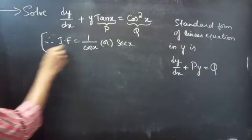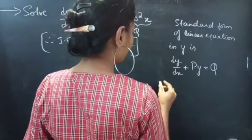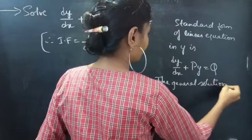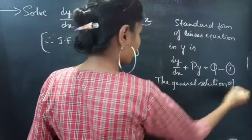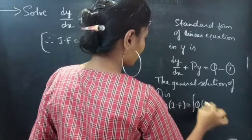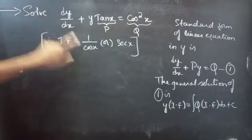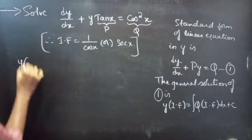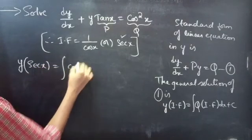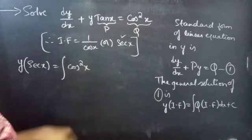Now, we need to find the general solution to the given equation. We know that the general solution of a linear equation in y is given by: y into integrating factor equals to integral of Q into integrating factor dx plus c. Using this formula, we can find the general solution. y into sec x equals to integral of Q, where Q equals to cos squared x, into the integrating factor, which can be taken as sec x or 1 by cos x.